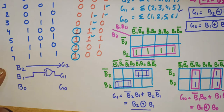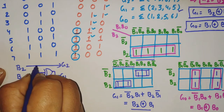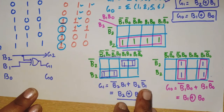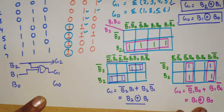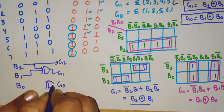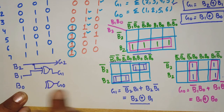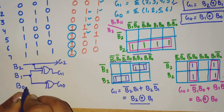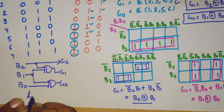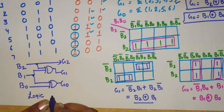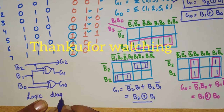For G0 equals B1 XOR B0, we use another XOR gate with inputs B1 and B0, and the output is G0. This is the complete logic circuit diagram of the 3-bit binary to gray code converter.